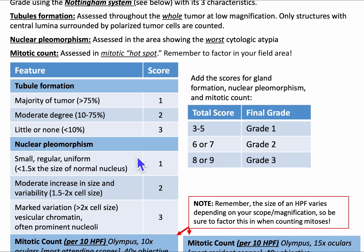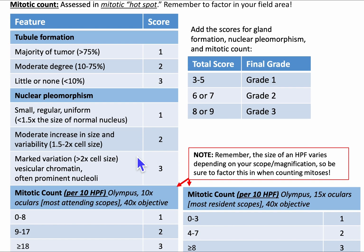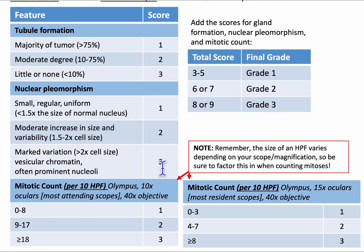For nuclear pleomorphism: if the nuclei look regular, small, and uniform — less than 1.5 times the size of a normal nucleus — it's score one. A moderate increase in size, approximately 1.5 to 2 times the cell size, is score two. If there's marked variation greater than two times the cell size, vesicular chromatin, and often prominent nucleoli, it's grade three. This is a bit subjective and it comes with time, experience, and the number of cases that you do.